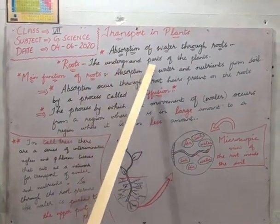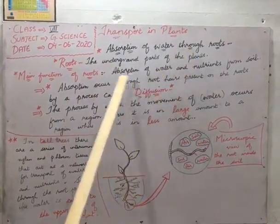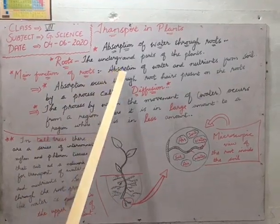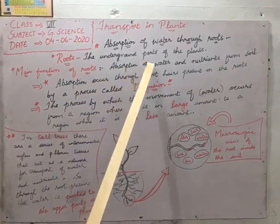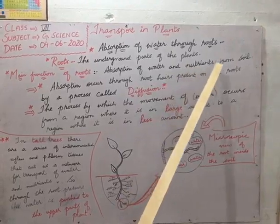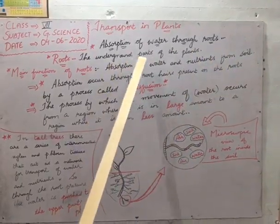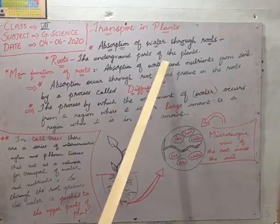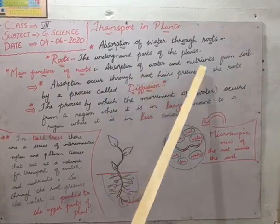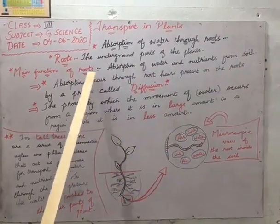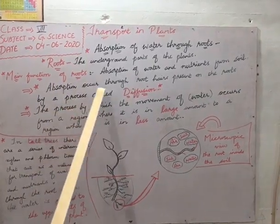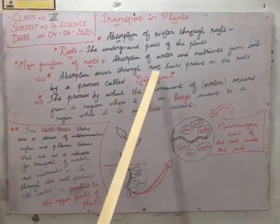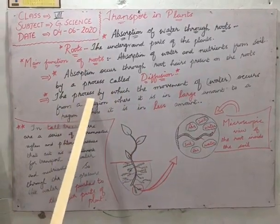What is meant by a root? Roots are the underground parts of the plant. The main function of the root is absorption of water and nutrients from soil. This absorption normally occurs through root hairs, which are the tiny hairs present on the roots.